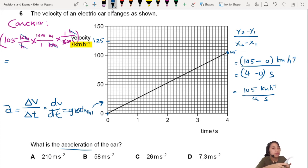105 times 1,000, divide by 3600. Wow, that's a very interesting number. 21.17-ish, somewhere there.